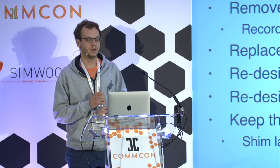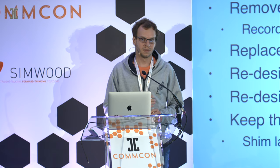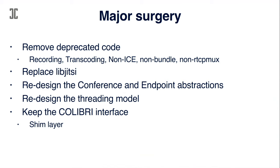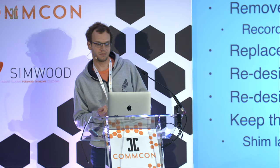We redesigned the internals, because the old versions were modeled over the way Jingle represents things — we had contents with one content for audio and one for video, with channels inside. In the new design, the endpoint is the important abstraction, and it happens to have audio and video streams attached. We redesigned the threading model — because of the old library, we had to have four different threads reading from the same socket for each single endpoint: one for audio, one for video, each split into RTP and RTCP. We completely redesigned this.